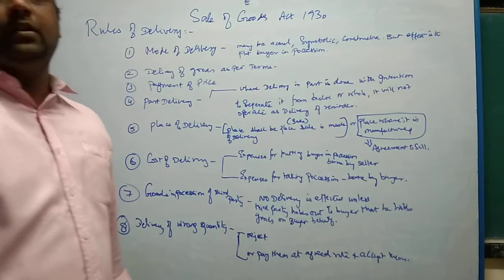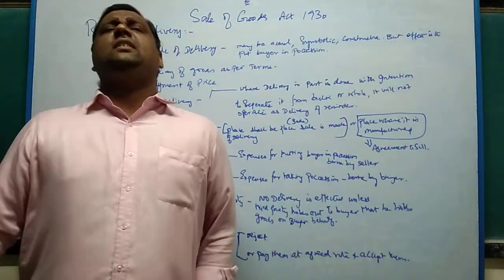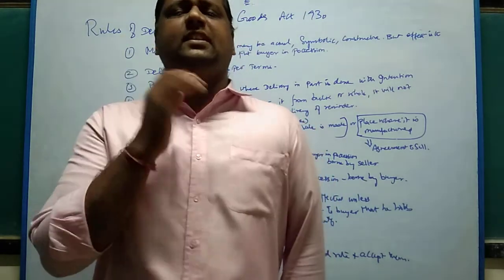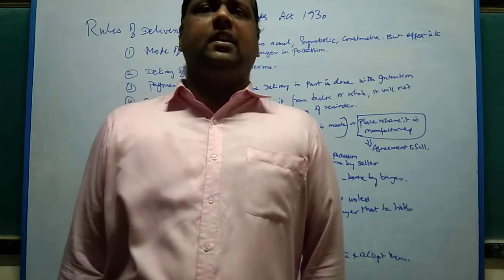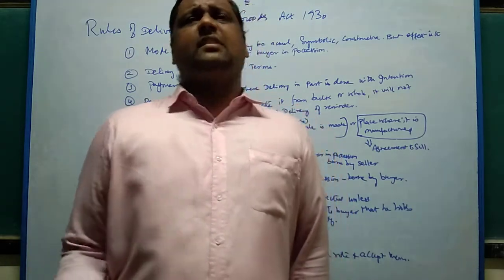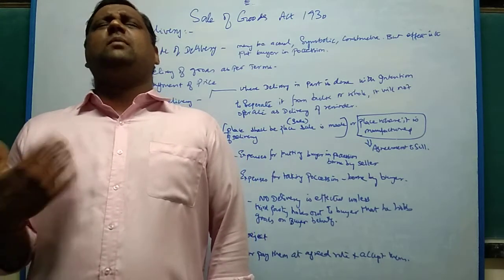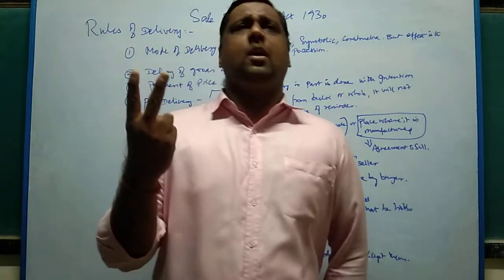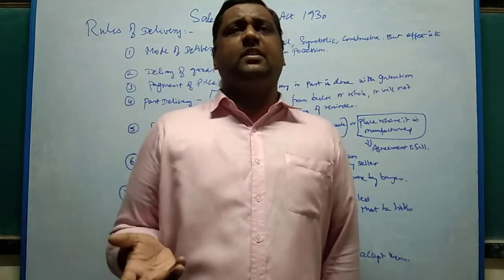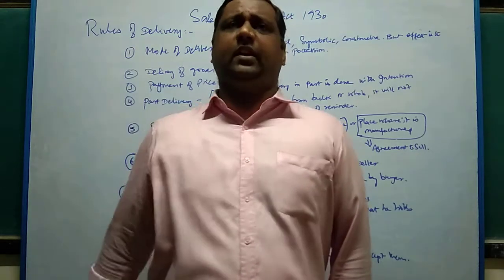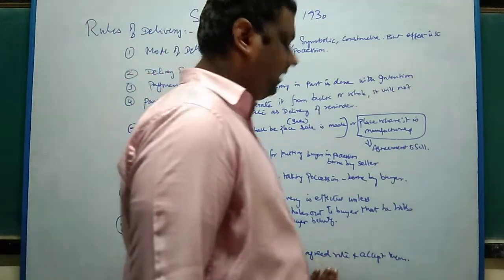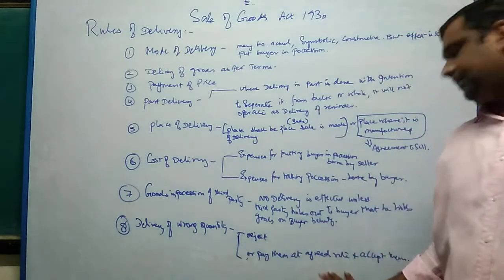Eighth rule: delivery of wrong quantity. Where buyer and seller agree upon a quantity but the seller delivers a lesser quantity — for example, the buyer orders 500 kgs of rice but the seller delivers only 200 kgs — this is a wrong quantity delivery. The buyer has two options: one, reject the entire 200 kgs and not pay the price; or two, accept the 200 kgs and pay the price for the 200 kgs delivered. These are the only two options for the buyer when wrong quantity is delivered.